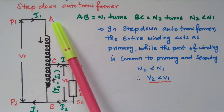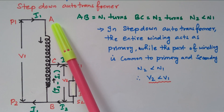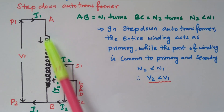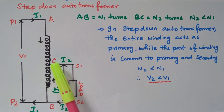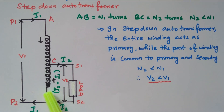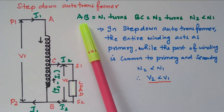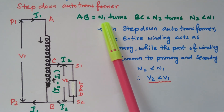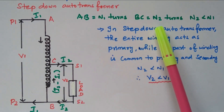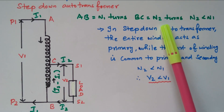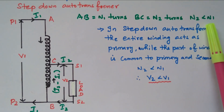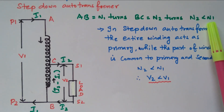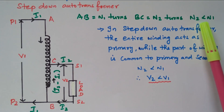The terminals are labelled A, B, and C. AB is the primary winding with N1 turns, and BC is the secondary winding with N2 turns. Since N2 is less than N1, the number of turns in the secondary is less than in the primary — so it automatically acts as a step-down transformer.